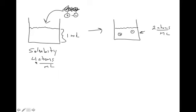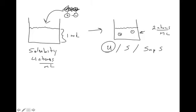If my solubility is four atoms per milliliter and this solution has two atoms per milliliter, would it be unsaturated, saturated, or supersaturated? Well, it would be unsaturated because it contains less than the maximum amount. The maximum amount it can hold is four, and it contains two. So that would be an example of an unsaturated solution.